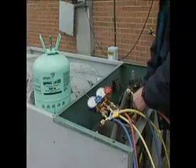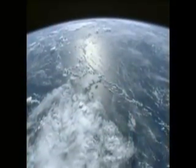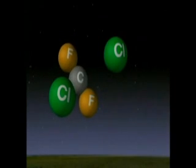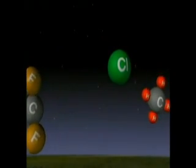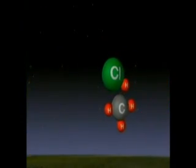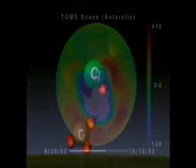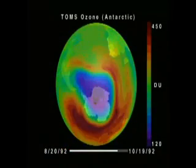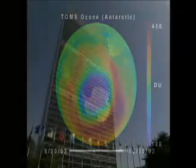CFCs, widely used in refrigerators and air conditioners, are quite harmless and non-reactive in the lower atmosphere. Carried slowly upward by the Earth's winds, they can survive the five-year journey into the stratosphere. Here, the sun's ultraviolet radiation breaks down the CFCs into the more reactive chlorine compounds that destroy ozone. As the CFCs have increased in the atmosphere, more ozone has been destroyed.